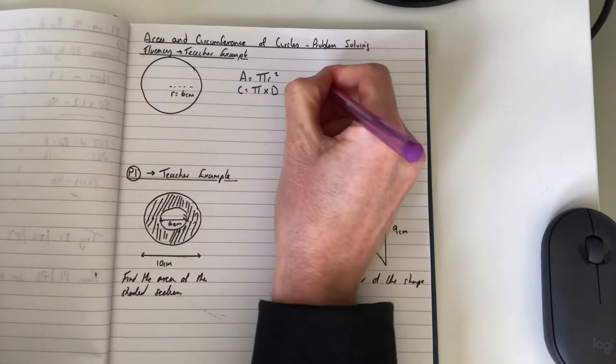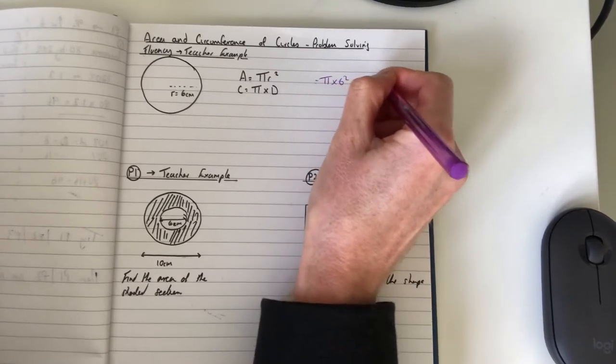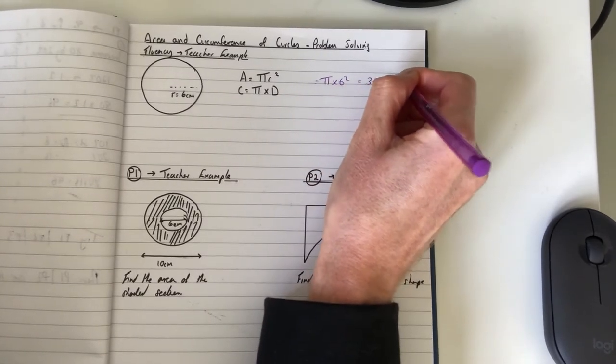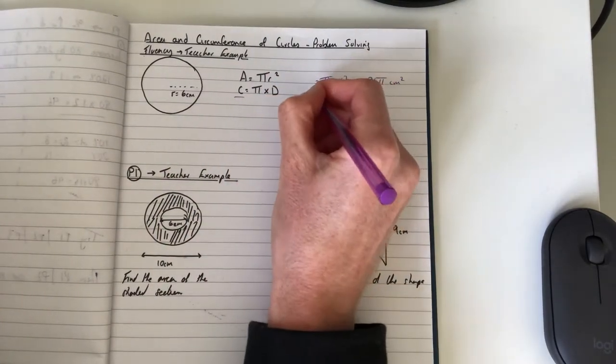As a reminder, to find the area of a circle it's πr². So that is π times 6² in this case, which would be 36π centimeters squared.